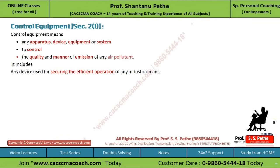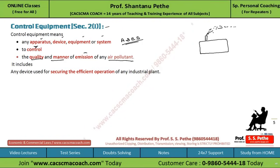Now let's see the definition of control equipment. Control equipment means any apparatus, device, equipment, or system — it can be any kind of apparatus, device, equipment, or system — to control the quality and manner of emission of air pollutants. For example, if there is a factory that emits certain air pollutants through a chimney, industries are asked to install such apparatus, device, equipment, or system to control the quality and manner of that emission. So control equipment needs to be installed by factories, industries, or processes.